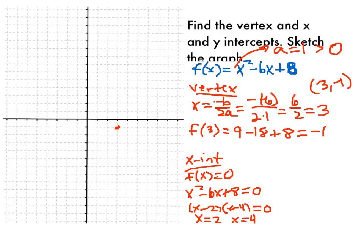So those are going to be my x-intercepts. The points 2 comma 0 and 4 comma 0, because when I plug in 2, my output is 0. When I plug in 4, my output is 0. So those are going to be my x-intercepts, 2, 0, and 4, 0.